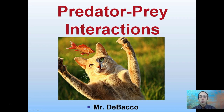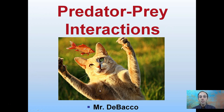Here we're going to look at predator-prey interactions. While I did put this image here on the title, I'm not quite sure how accurate it is, but it does get the point that the cat here is the predator and the goldfish is the prey. They're interacting with their environment.